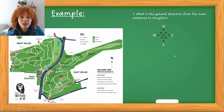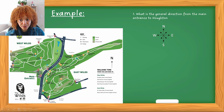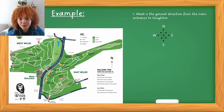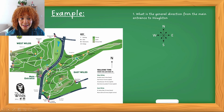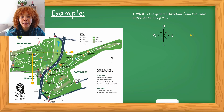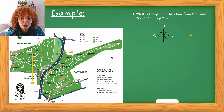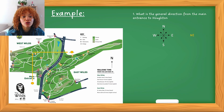The question is asking the general direction from the main entrance to Uton. So here we have the main entrance and over there we have Uton. You always go up or down first — north or south first. From the main entrance I need to go up, so I'm moving in the north direction, and then I have to go to the right which means I'm going in the east direction. So your answer for this question is north-east. You have to travel in a north-east direction to go from the main entrance to Uton.